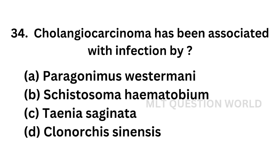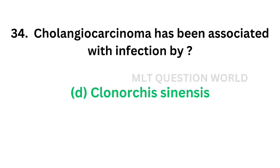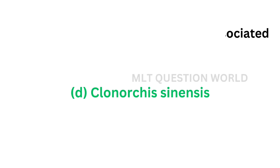Question number 34: Cholangiocarcinoma has been associated with infection by — option A: Paragonimus westermani, option B: Schistosoma haematobium, option C: Taenia saginata, option D: Clonorchis sinensis. The correct answer is option D, Clonorchis sinensis. Cholangiocarcinoma has been associated with Clonorchis sinensis infection.